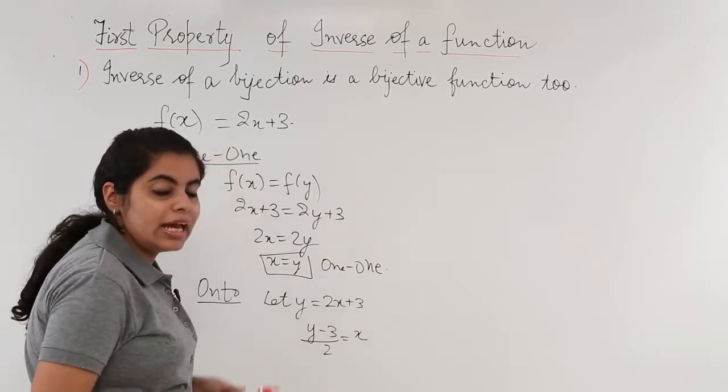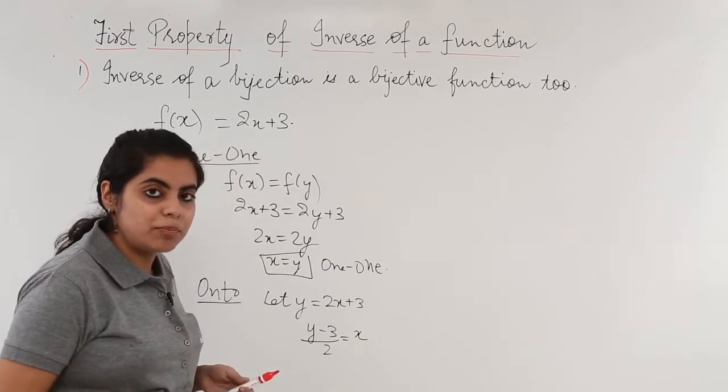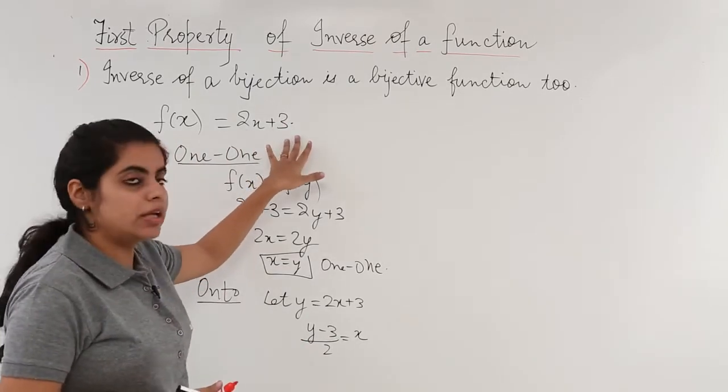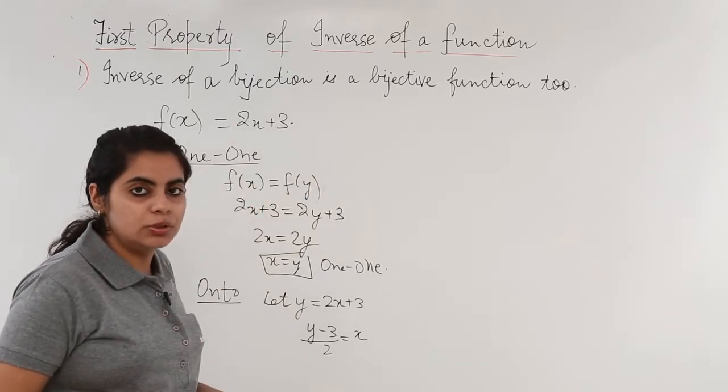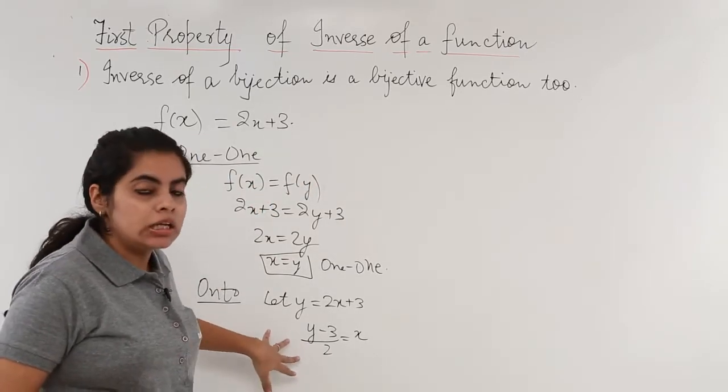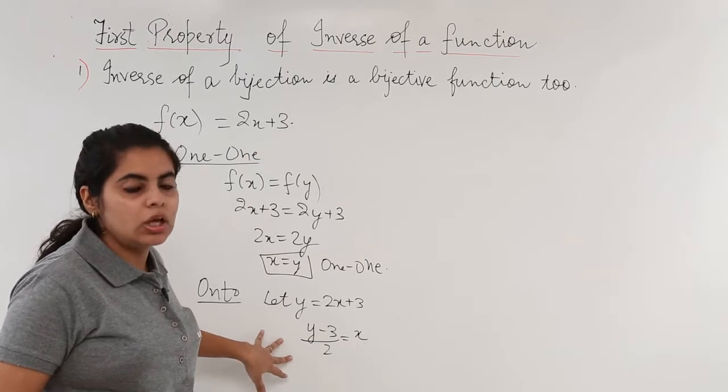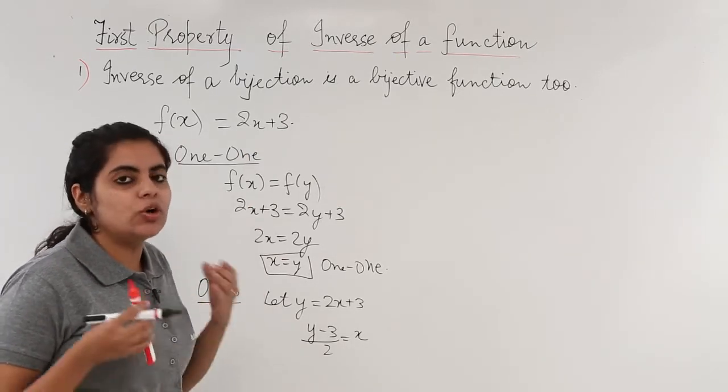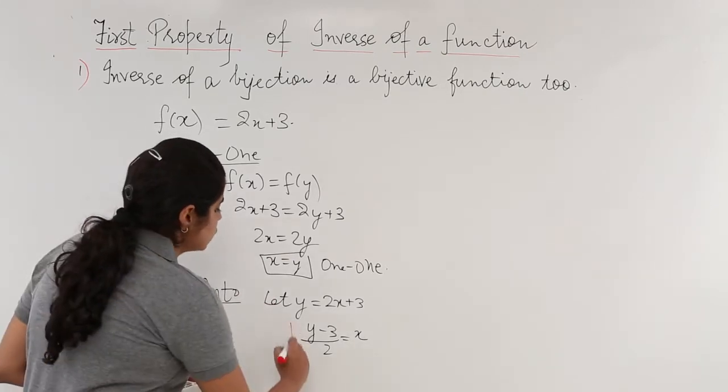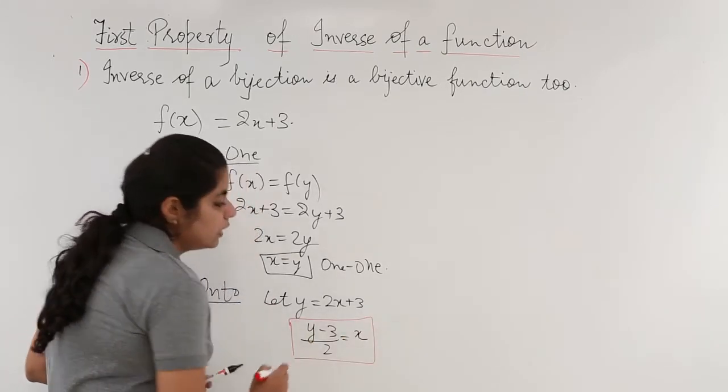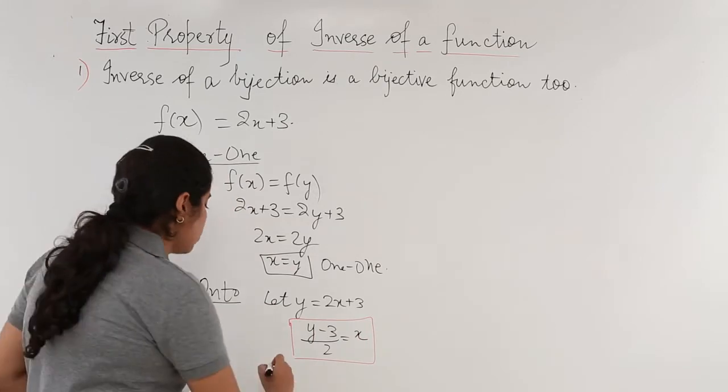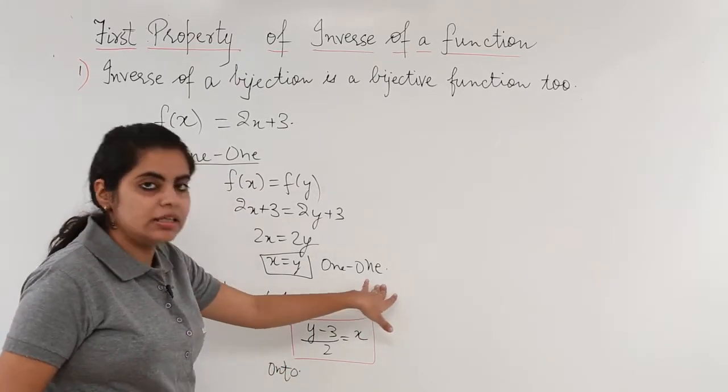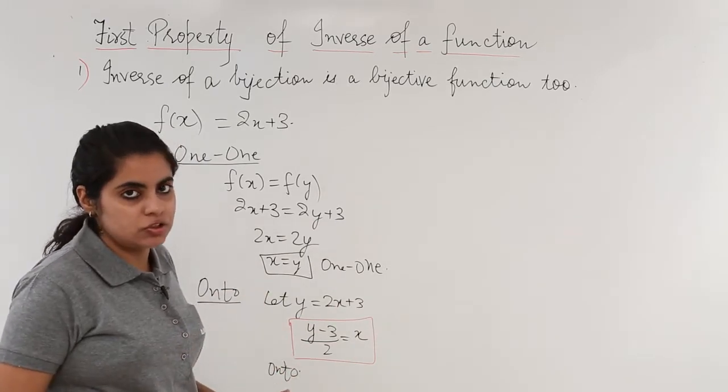From this y, then I say that since the mapping is always from real to real unless mentioned, which is not mentioned here, so it is understood that it is from real to real. Every element in the codomain would obviously be having some or the other pre-image in the domain from this relation or this x value. So it is onto also. Since it is both one-one and onto, I say it is a bijective function.